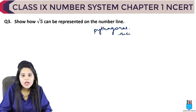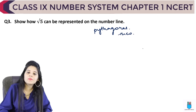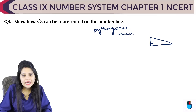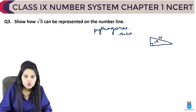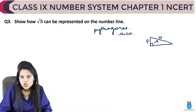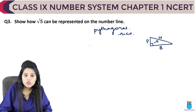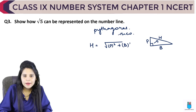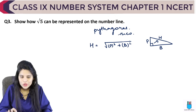Let me remind you of the Pythagoras theorem. If you have a right-angle triangle with a 90-degree angle, the side opposite to it is the hypotenuse, and the other two sides are the perpendicular and the base. According to Pythagoras theorem, the hypotenuse equals √(perpendicular² + base²).